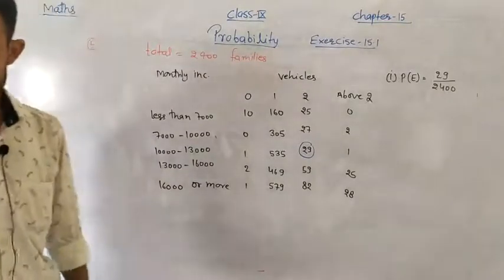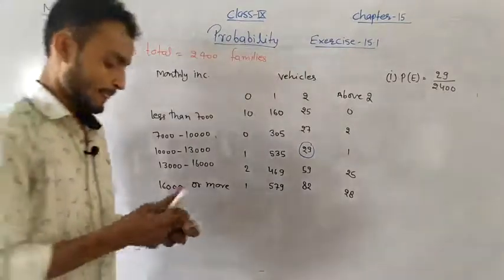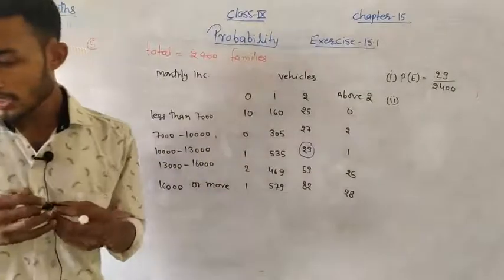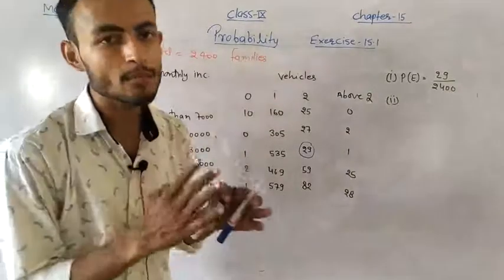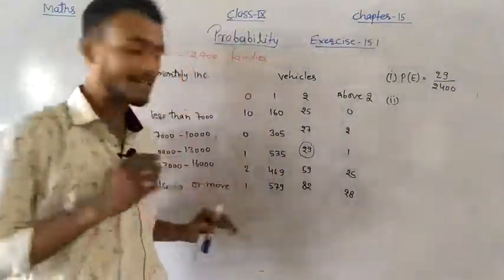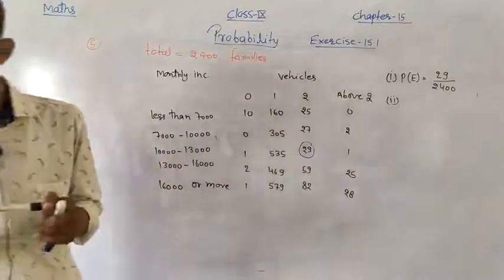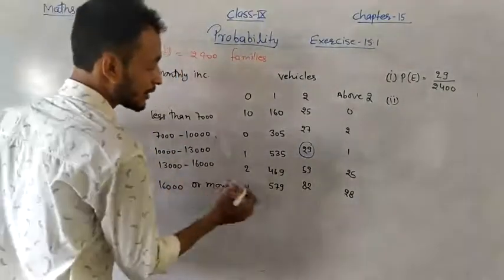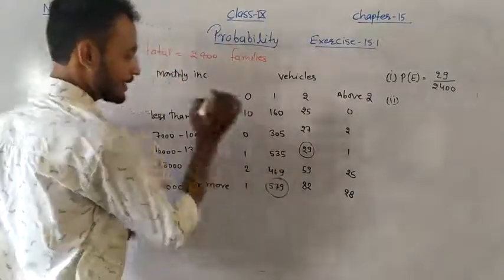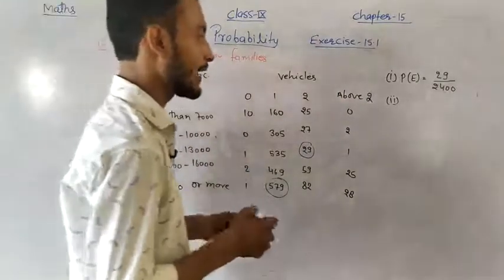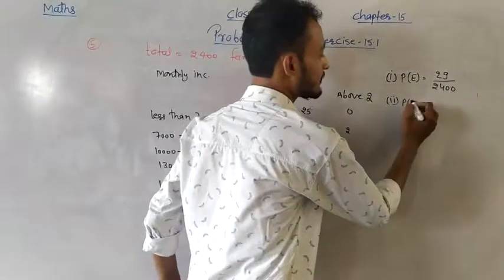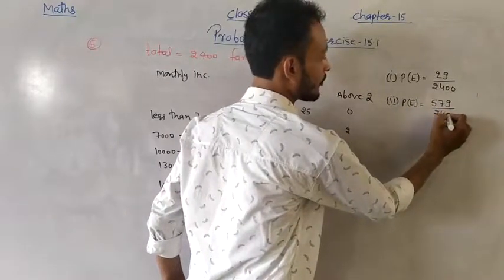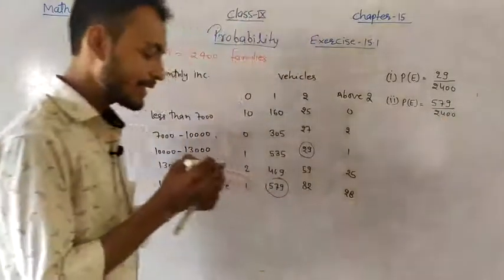Second sub-question: earning 16,000 and more, and owning exactly one vehicle. From the table, such families = 579. So probability = 579/2400.